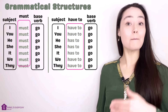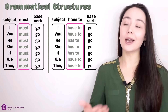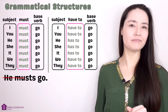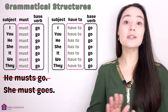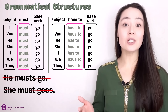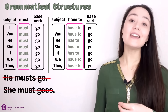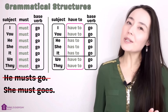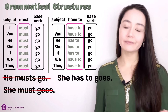Must remains the same for all subjects: I must go, you must go, he must go. The forms stay the same — there's no 'he musts go' or 'she must goes.' Have to changes depending on the subject: I have to go, you have to go, but he/she/it has to go. And we always keep the base form after 'to' — never 'she has to goes.'